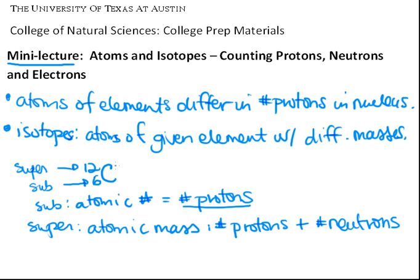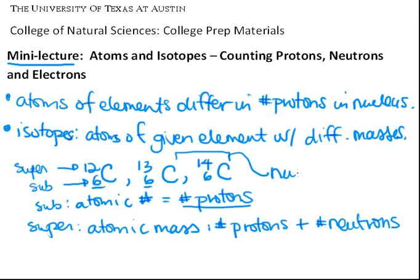Isotopes are atoms of a given element with a different mass. The atomic number must stay the same for carbon, but since the top number corresponds to atomic mass, there are isotopes of carbon — there's carbon-13 and carbon-14. The number of protons stays the same, but the isotopes just have different atomic weights. These atoms are referred to as nuclides.